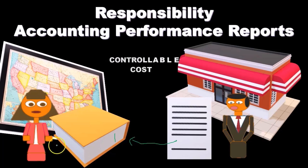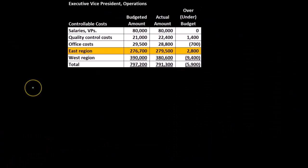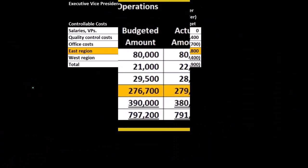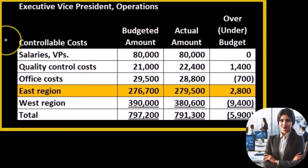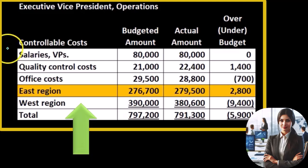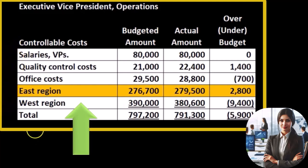If we consider just how this cost structure could work — if we consider an executive vice president of operations — these are the controllable costs at the higher level. For the executive vice president of operations, we have the controllable costs: the salaries for the VPs, the quality control costs, the office costs, the east region, and the west region.